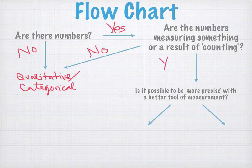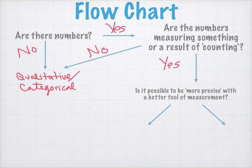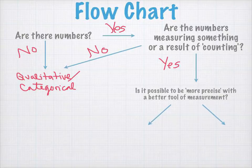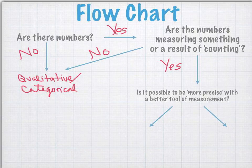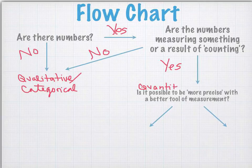If the numbers are measuring something — for example, the number of children somebody has, or the length of a beam in a steel building — these examples are the result of counting or measuring. So if the answer is yes, these numbers are measuring something or are the result of counting, then we know it's going to be quantitative, or numerical, data.